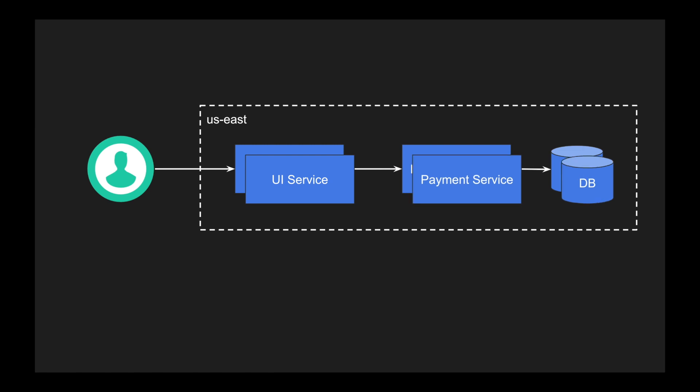We want to do the same for the payment service and the database service as well. For the sake of this discussion, let's say I want to create a very critical payment wallet system. So in order to make our system highly available, I'm replicating my applications into multiple instances in the same region — two instances of UI service, two instances of payment service, and two instances of the database. These databases are synchronously replicated, meaning if I persist into one database the other gets immediately updated as well.